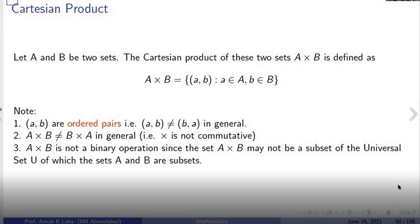Why are they called ordered pairs? Because the ordering matters. A comma B is not same as B comma A. So A, B and B, A are two different things. So since ordering matters, A cross B is not same as B cross A. So the cross is not commutative.